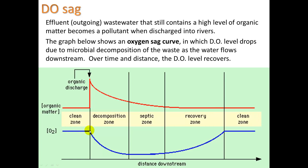Looking at the oxygen level: it starts off high, but during decomposition, oxygen is used up by the microorganisms. Once the organic matter is mostly decomposed, there's less food for microorganisms, so oxygen begins to recover — from algae, plants along the river, and oxygen diffusing through the river's surface. A fast-flowing river is especially beneficial for this. Eventually, oxygen returns to its original level. The zones along this curve are the decomposition zone, septic zone, recovery zone, and clean zone — focus on understanding the process, not memorizing the names.